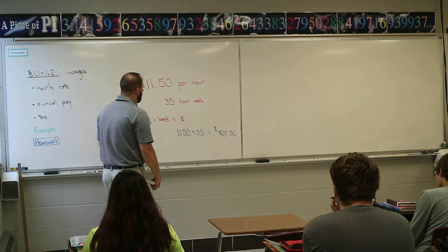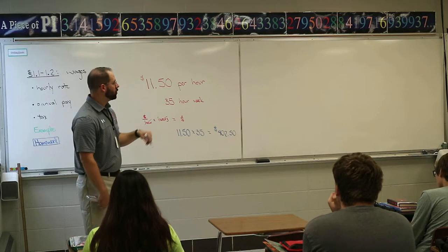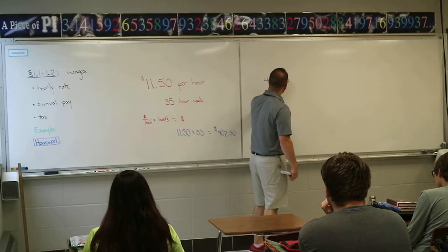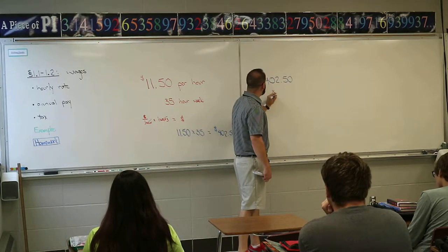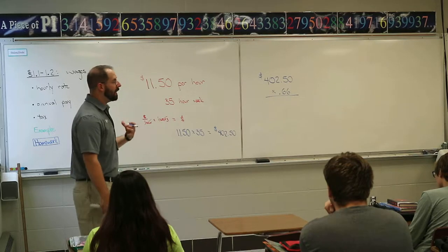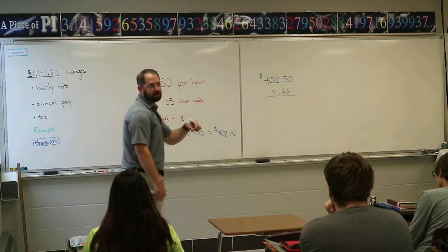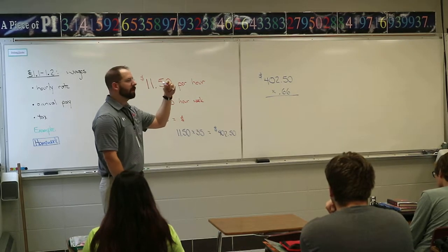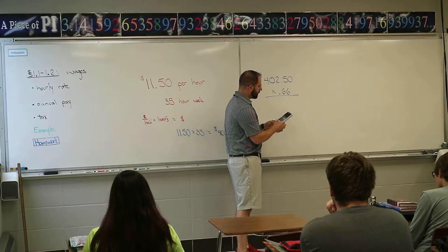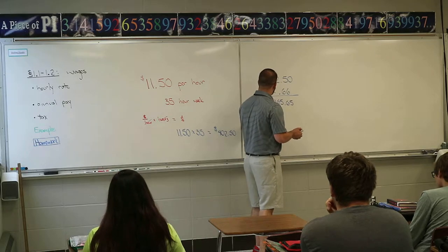To find your net pay, take your $402.50 — that's your gross pay before taxes — and multiply by 0.66. That gives you the money you're actually getting in cash on payday, because you're not getting all $402. The rest goes to Social Security, insurance, state taxes, and so on. So $402.50 times 0.66 equals $265.65 — that's your net pay, what you're taking home.